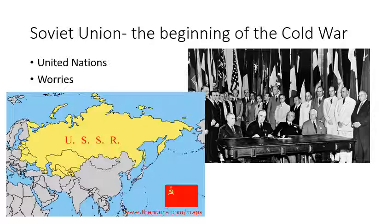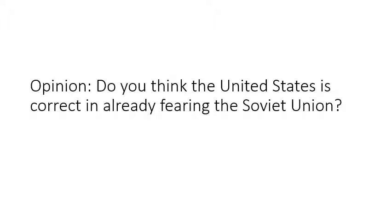However, what did justify American concerns was that the Soviet Union couldn't resist exerting influence over the Middle East. They pressured Turkey to give it partial control of an exit on the Black Sea, and retained troops in Northern Iran until literally warned off by the United States. The Soviet Union was also ruthless in supporting communist-controlled Eastern European countries between 1946 and 1947 — aiding a communist takeover of Bulgaria, backing a coup in Romania, and undermining the last non-communist political opposition in Poland. So, do you think the United States was correct in already fearing the Soviet Union at this point?